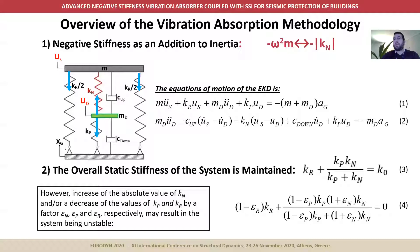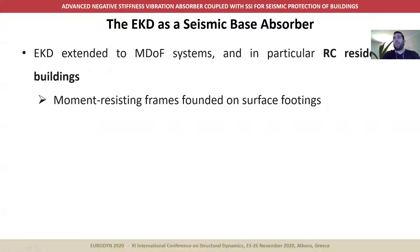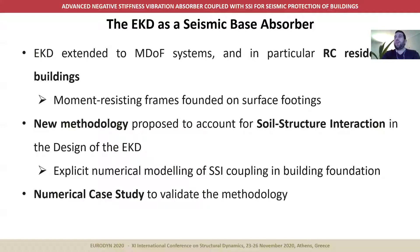As such, this potential variation is taken into consideration by introducing the epsilon_R, epsilon_P, and epsilon_N factors, and in this way stability is ensured. Moving on, the EKD is now applied to multi-degree of freedom systems, and in particular reinforced concrete residential buildings, which are modeled as moment-resisting frames founded on surface footings. A new methodology is proposed to provide a new design algorithm of the EKD, which explicitly accounts for soil-structure interaction effects at the foundation level of the building. Finally, a numerical case study is briefly presented to validate this new methodology.